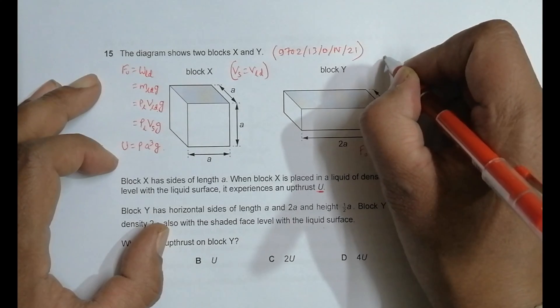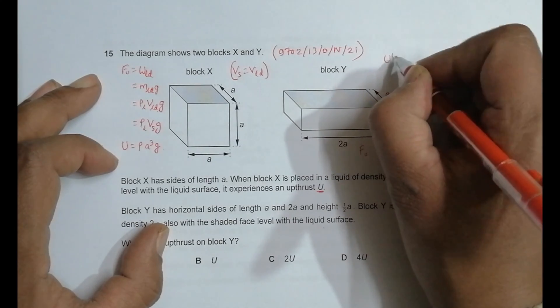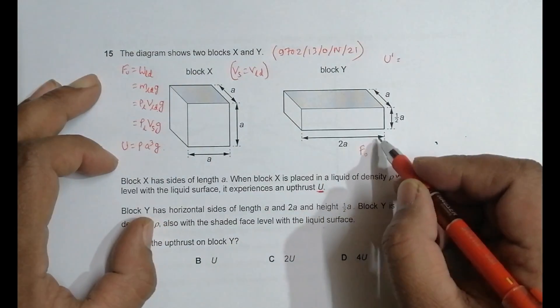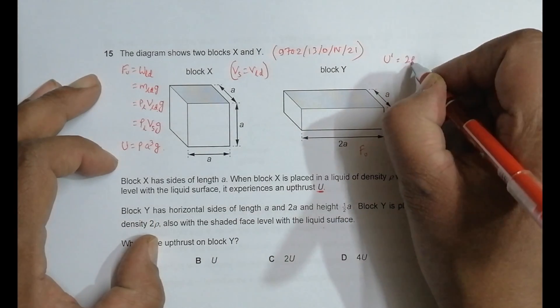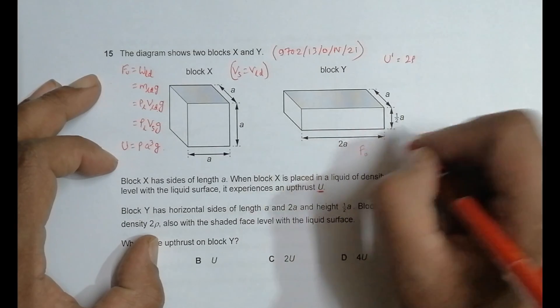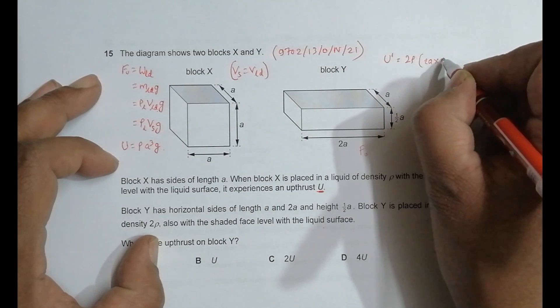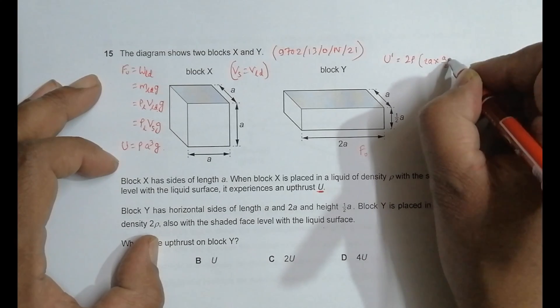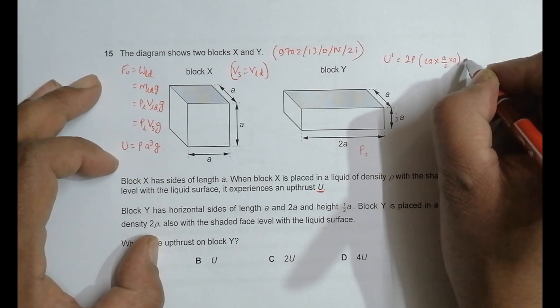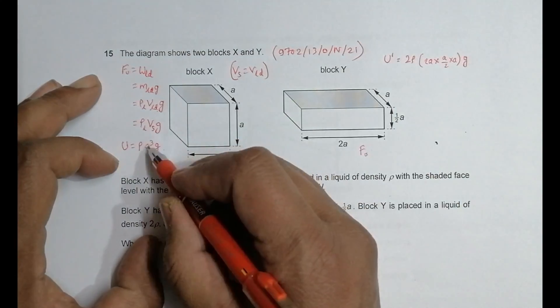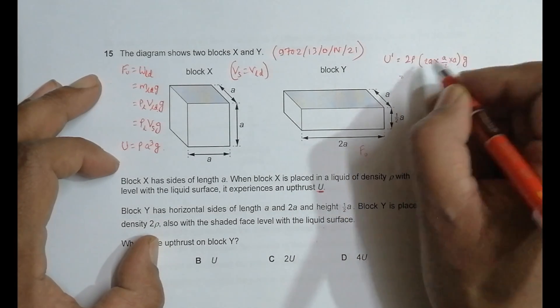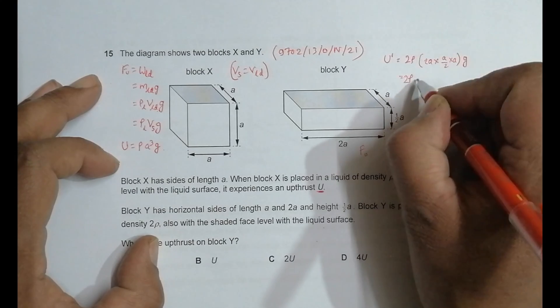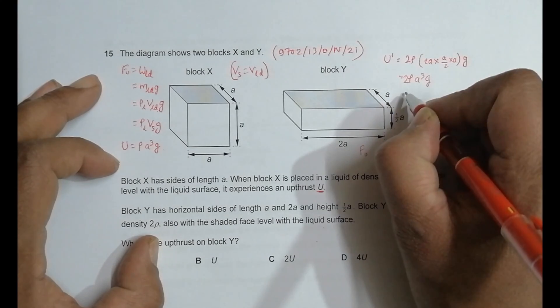In the second case, the new force of upthrust U' will equal the density, which is 2ρ, times the volume. The multiplication of the sides gives 2a × a/2 × a, times g. This volume simplifies to a³, so U' equals 2ρ × a³ × g.